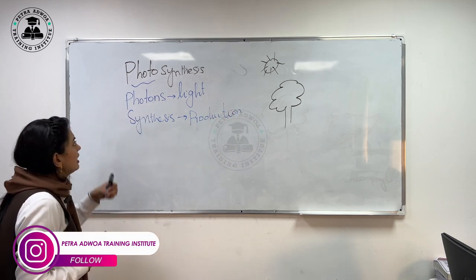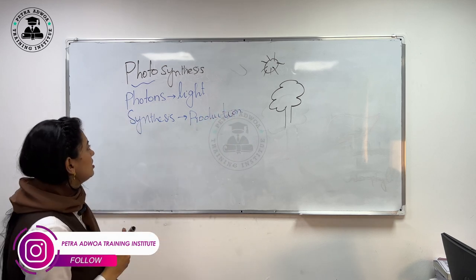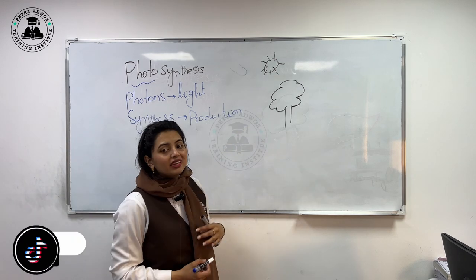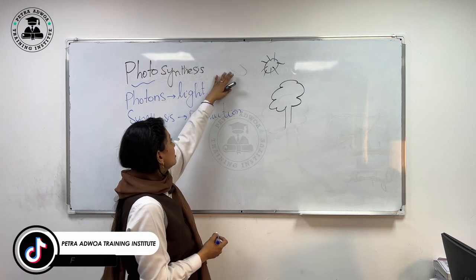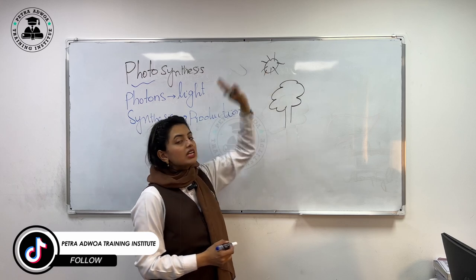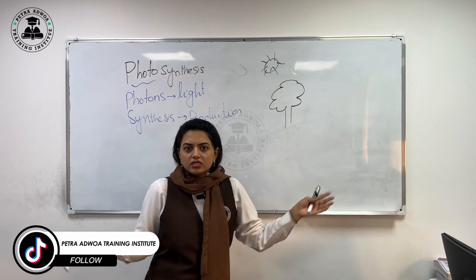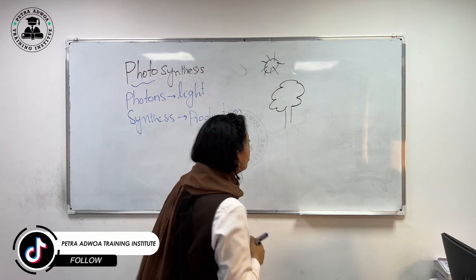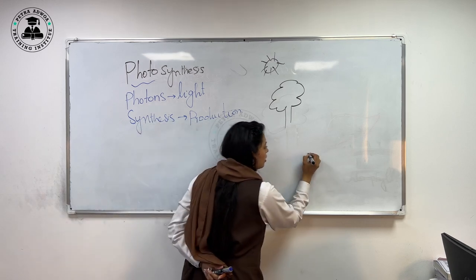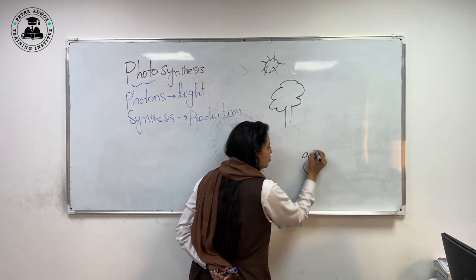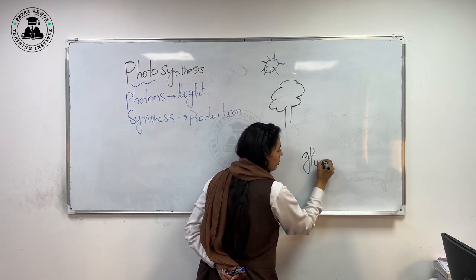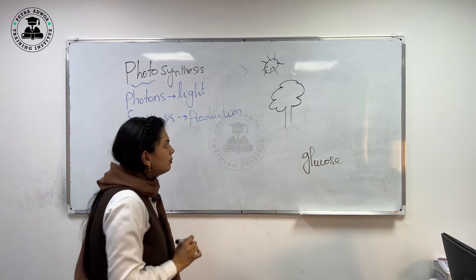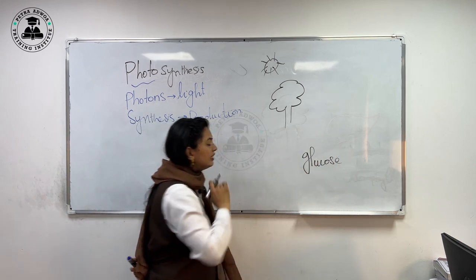So photosynthesis is the procedure by which the plants can prepare their own food in the presence of sunlight. What is the food of the plant? I will tell you — the food of the plant is glucose. Plants can prepare their own food, which is glucose.